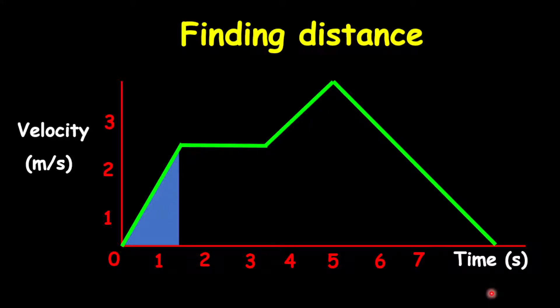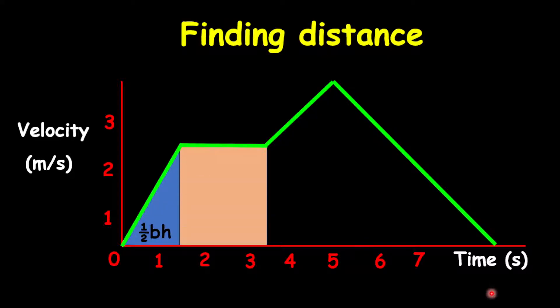The first part there is a triangle. I'm not going to use any numbers here. I just want to show you how to break this down. And then, of course, you know how to find the area of each shape. So that's half base times height. The second journey right there, which is a uniform velocity or constant velocity, is a rectangular shape. So therefore, here we're going to have base times height.